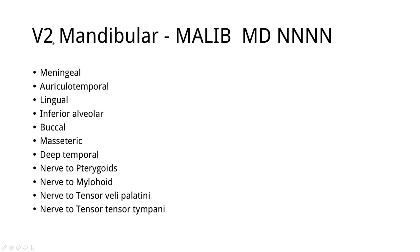Sorry, this is supposed to be V3 and not V2. So V3, mandibular. The mnemonic is Malib MD NNNN — imagine a Dr. Malib with four N's stuck after his name. So Malib MD NNNN stands for: meningeal, auriculotemporal, lingual, inferior alveolar, buccal, masseteric, deep temporal, nerve to pterygoid, nerve to mylohyoid, nerve to tensor veli palatini, and nerve to tensor tympani muscle.